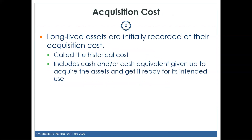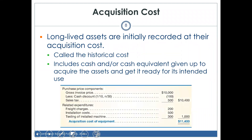Acquisition cost: when you purchase a long-term asset, you record it at the asset's acquisition cost. The acquisition cost includes the purchase price plus all costs necessary to not only acquire the asset but to get the asset ready for its intended use. So it often isn't just the purchase price. If you have to pay to ship the asset, have it assembled, pay sales tax, or pay someone to examine it — all those things are part of the acquisition cost.